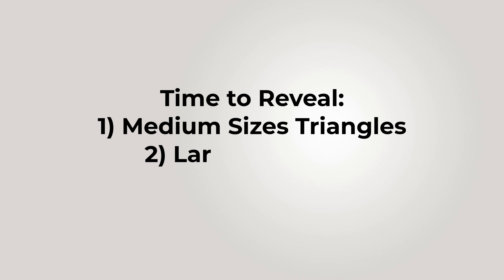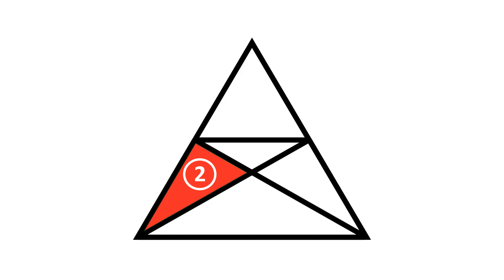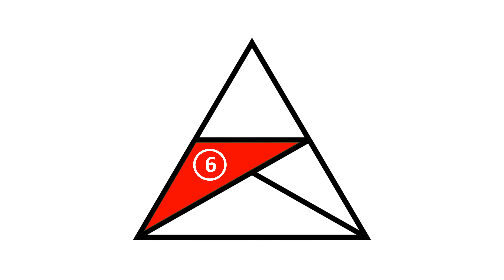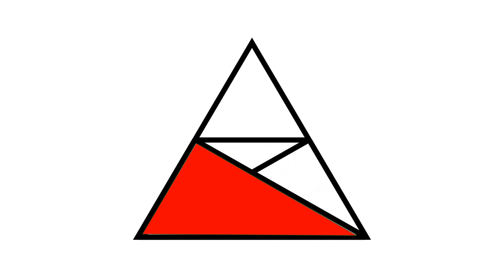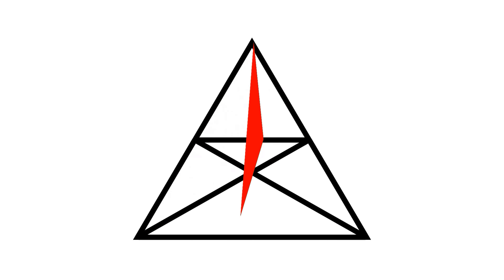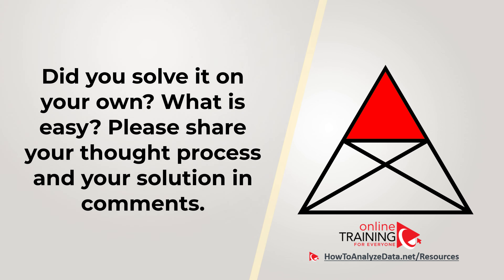Let me show them all: starting with the smaller triangles, then medium-sized ones, then the large ones — one, two, three, four, five, six, seven, eight, nine, ten, eleven, and twelve. Did you come up with a different answer? Please share your thought process in the comment section so we can all learn from your perspective. Hopefully you nailed this question.